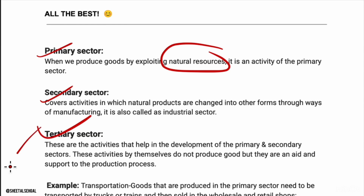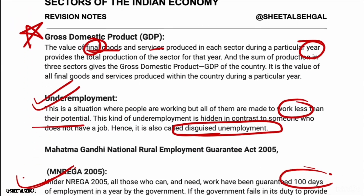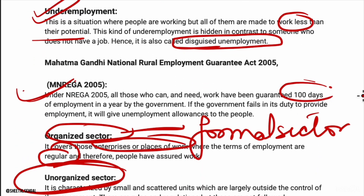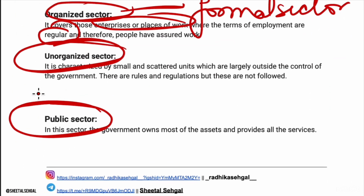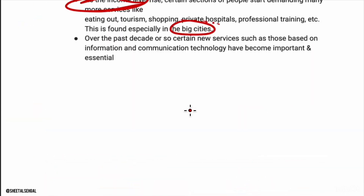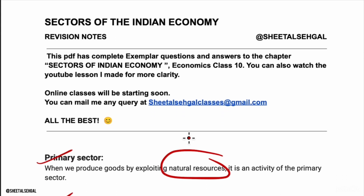To summarize: we have covered primary sector, secondary sector, tertiary sector, service sector, GDP, under-employment, disguised unemployment, organized and unorganized sectors, and public and private sectors. This whole chapter has been covered. Watch it first, then revise. Thank you.